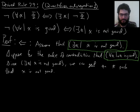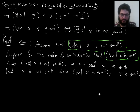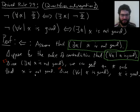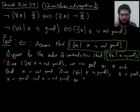Now I have something to apply this for-all statement to. Since everything is good according to this for-all statement, x here in particular is good. So we have an existential instantiation giving us 'x is not good', and a universal instantiation giving us 'x is good'. Do you see the contradiction? x is not good and x is good — so we have a contradiction.